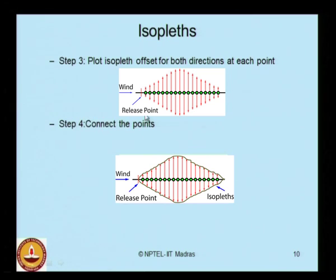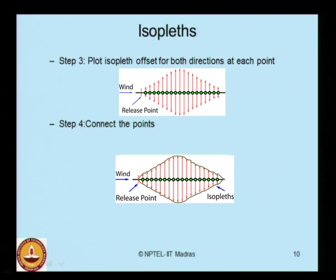Having identified the release source, the downwind direction, and the concentration points, plot the extent of the cloud boundary at every concentration point. Then connect these points, and the line joining them is what we call the isopleth.